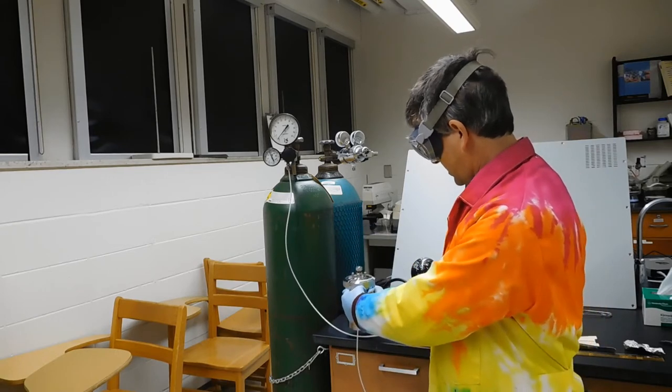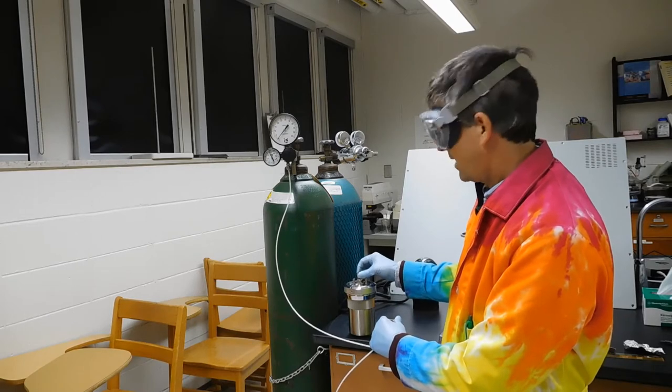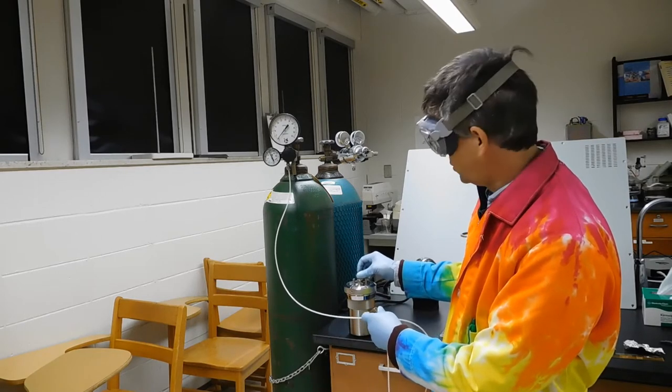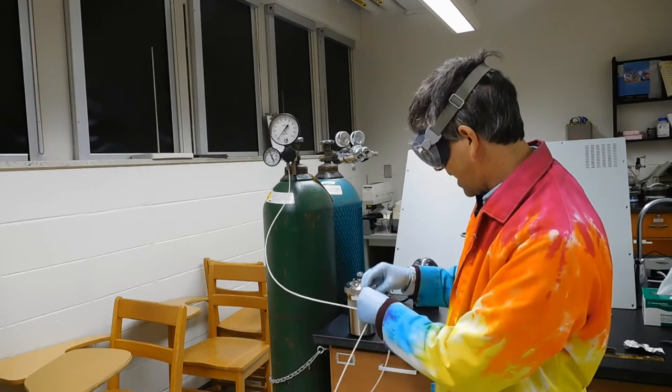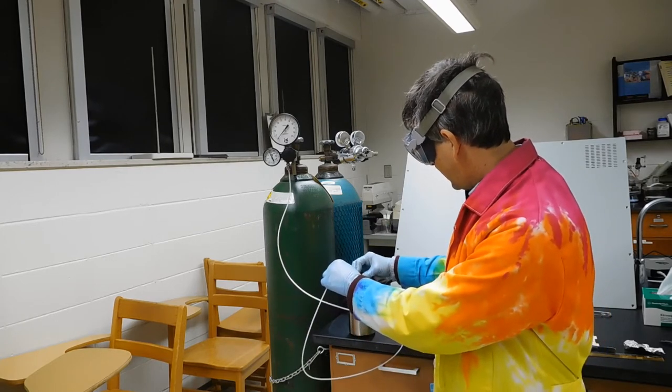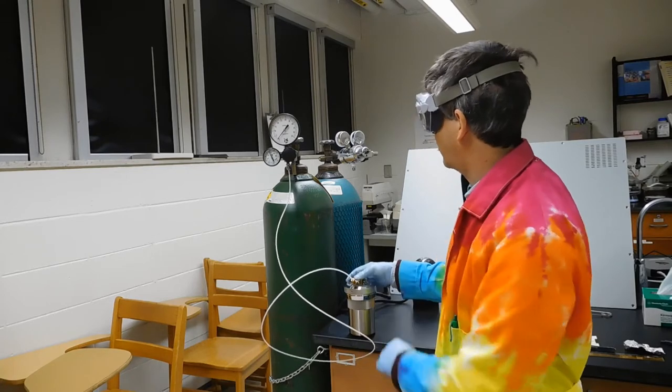This screw top right here is the release valve, and before you start this process initially, you do want to make sure this is open. Don't unscrew it too far. It'll screw all the way out. We don't want to do that. Then you can slide this on. Make sure you slide it down so the second seal will be sealed.